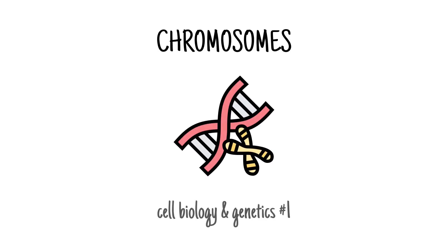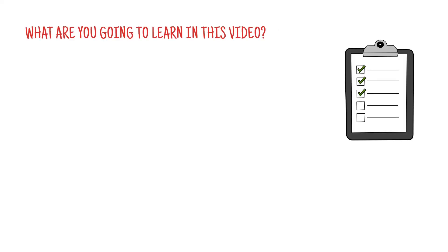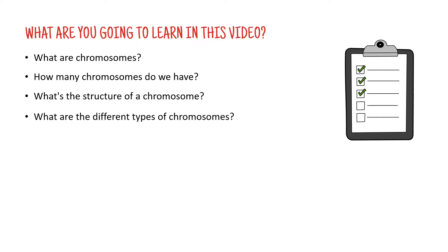Hello and welcome to the first video in our course on cell biology and genetics. In this video we are going to talk about chromosomes. So what are you going to learn in this video? We are going to discuss what chromosomes actually are, how many they are in the human body, we are going to look at their structure and we are going to talk about the different types of chromosomes.